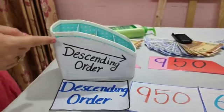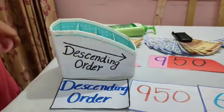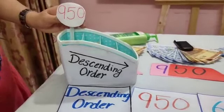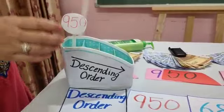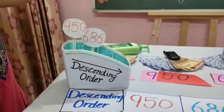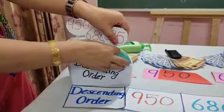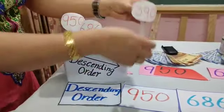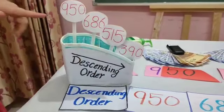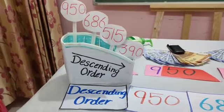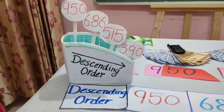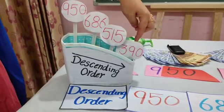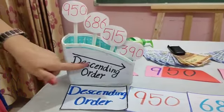Now we will arrange the value tags in descending order. First we will put the highest price, then lower than it, and then lower than it, and at last the lowest price, that is Rs. 390. Now speak with me: first take the highest price, then comes lower, lower. This series, children, is called descending order.